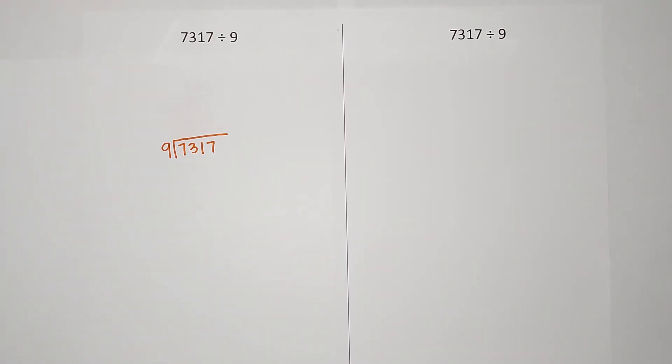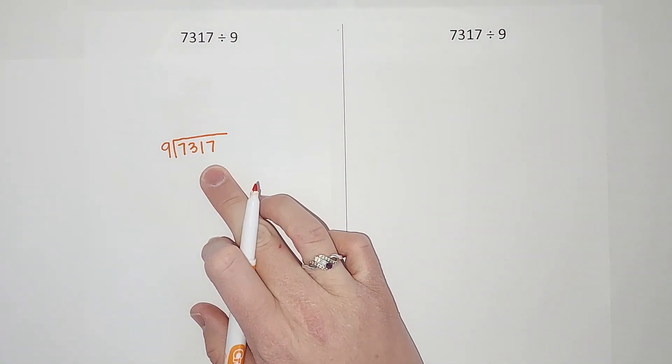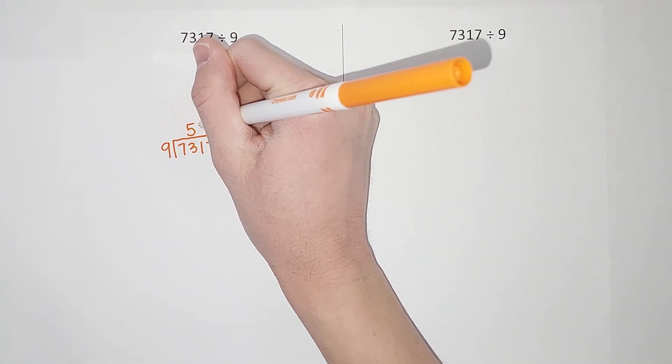When we're doing this, the first thing we do is, how many times does 9 go into 7317 approximately? We're thinking in kind of general terms here. So I think, okay, 9 times 100 is 900, so that's not near enough. 9 times 1000 is 9000, so that's too much. I kind of want to hit in the middle somewhere. So I know that 9 times 500 gives me 4500. If you didn't know that off the top of your head, plug in a calculator. That's less than this, so I know 9 goes into this at least 500. So I'm gonna do 500, write it up here.